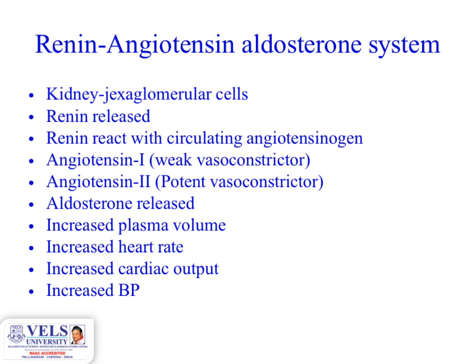The renin-angiotensin-aldosterone system: renin is released from the juxtaglomerular cells of the kidney. Renin reacts with circulating angiotensinogen and converts it to angiotensin 1, which is a weak vasoconstrictor. Angiotensin 1 is then converted to the potent vasoconstrictor angiotensin 2. Aldosterone is released, increasing plasma volume, heart rate, and cardiac output, ultimately increasing blood pressure.